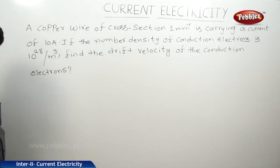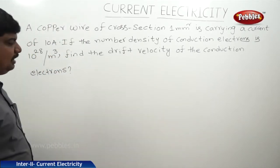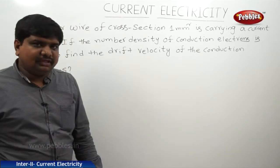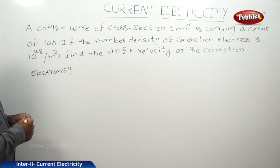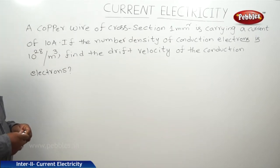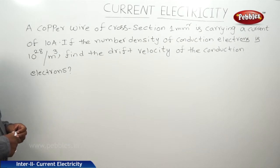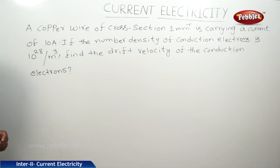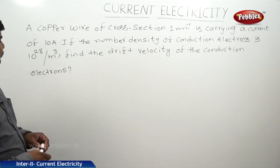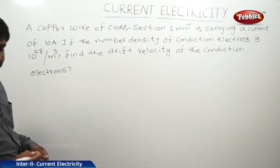This problem is related to the drift velocity of conducting electrons. A copper wire of cross-section 1 millimeter square is carrying a current of 10 amperes. The number density of the conducting electrons is 10 to the power of 28 per meter cube. Find the drift velocity of the conduction electrons.